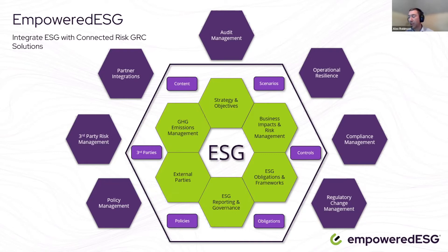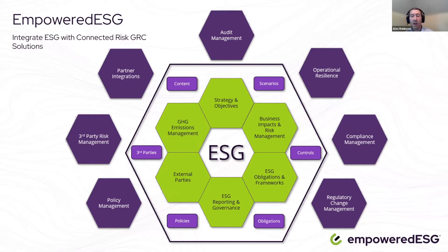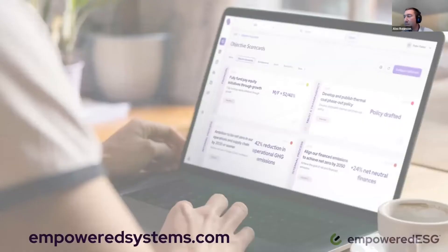All of these modules can benefit from the same emerging risk information and management capabilities. For example, looking at the ESG frameworks and obligations, we can integrate that with full regulatory change management capability so you can monitor and assess the impact of all regulatory events that might occur. To find out more about Empowered ESG solutions or integration with connected risk solutions, please take a look at empoweredsystems.com.